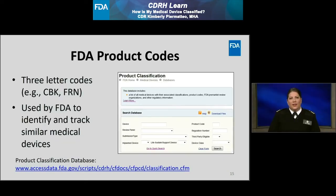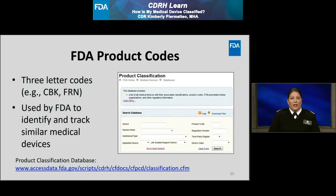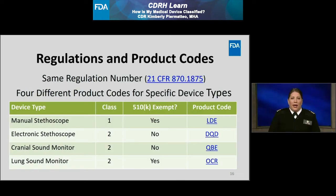When discussing the device class and extent of regulatory requirements, it's important to mention FDA product codes. FDA product codes are three-letter codes used to identify and track similar devices. If you are able to determine the appropriate FDA product code for your device, you can then easily determine the applicable regulatory requirements. Product codes can be found by searching the FDA's Public Product Classification Database. Within the CFR, the FDA has classified various device types based on risk. Each regulation number may have one or more associated product codes which are classified differently and have different regulatory requirements.